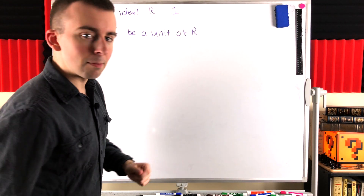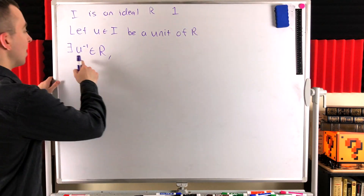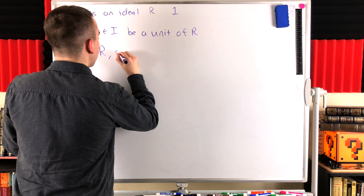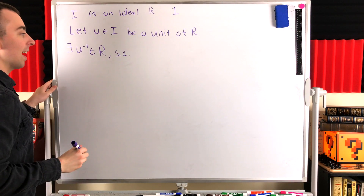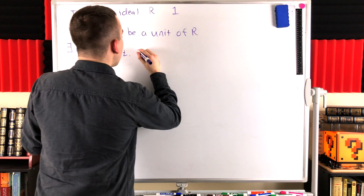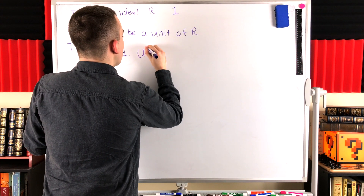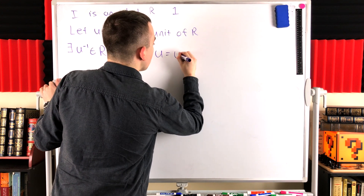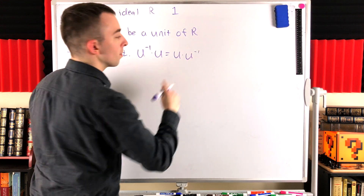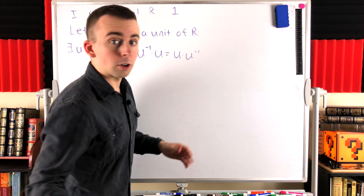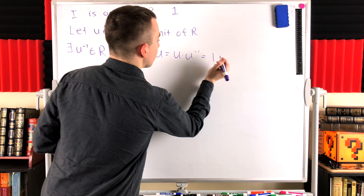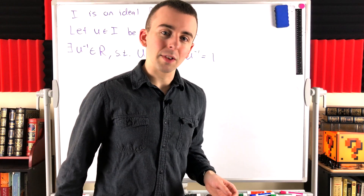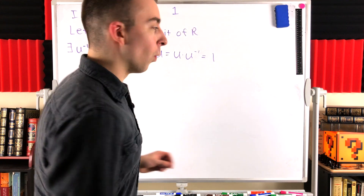This is what being a unit means — it means that there's this inverse element in the ring, such that U⁻¹ · U = U · U⁻¹, and the order doesn't matter for inverses. Of course, their product is equal to the multiplicative identity 1.